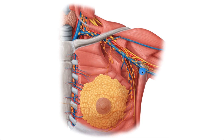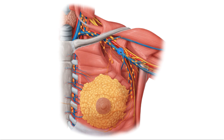In this region, we have several groups of lymph nodes. Here we've got a group which is called the pectoral axillary lymph nodes. Then here we have the subscapular axillary lymph nodes. Superior to this, we have the brachial axillary lymph nodes and the central axillary lymph nodes.